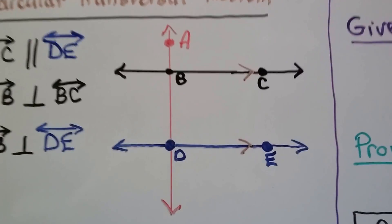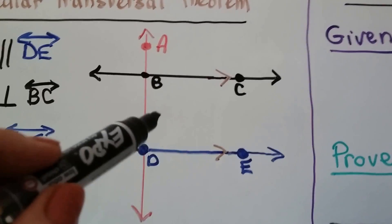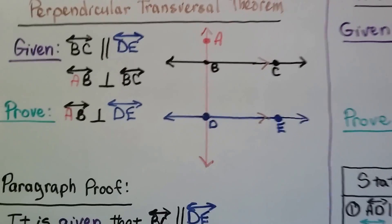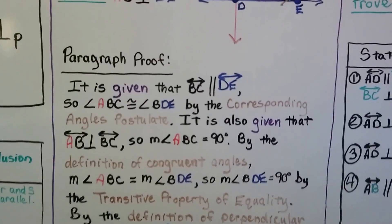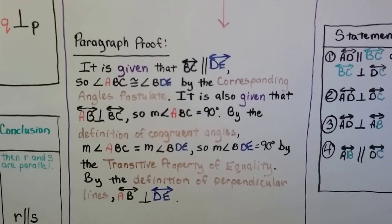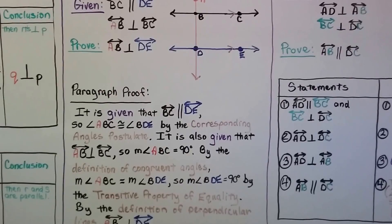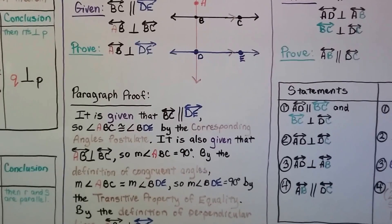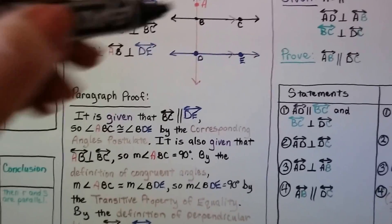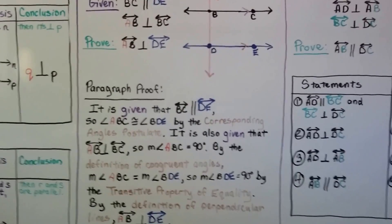Looking at angle ABC and angle BDE, they're both on the same side of this red transversal and they're both above the line — ABC is right here and BDE is right here. They're corresponding angles on the same side of the transversal, both above the line, so we use the corresponding angles postulate. It's also given that line AB is perpendicular to the black line BC, so the measure of angle ABC equals 90 degrees. By the definition of congruent angles, measure of angle ABC equals measure of angle BDE. So the measure of angle BDE equals 90 degrees by the transitive property of equality.